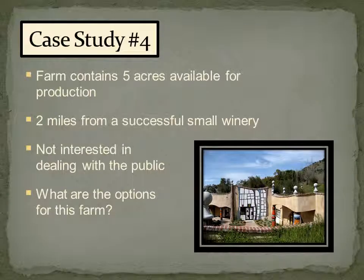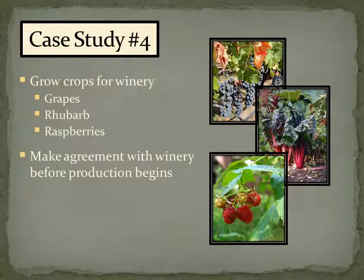Case Study Number Four: a small farm with five acres available for production, located two miles from a successful small winery, and not interested in dealing with the public. What options does this farm have? My solution: grow crops for the winery — grapes, rhubarb, berries. I talked to one individual farmer who has all of his crops sold to one winery just down the road. He's developed his market, he's going to receive a wholesale price, but it's close, it's easy, it's convenient, and he only has to deal with one customer.